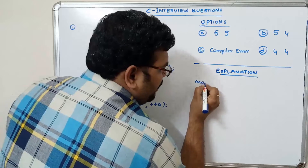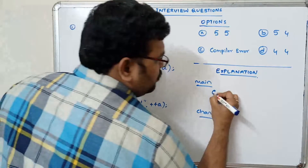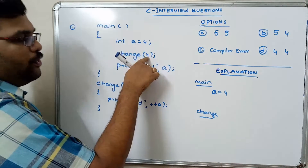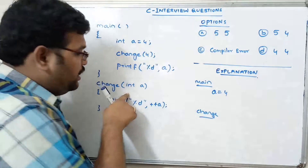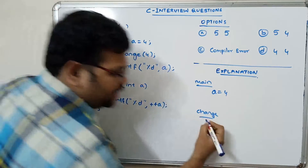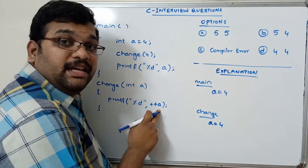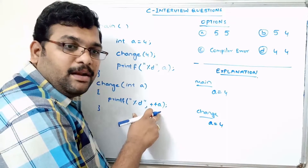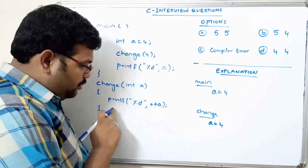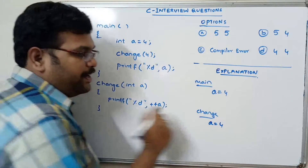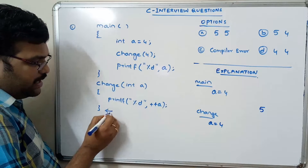In the main function, a is equal to 4 and 4 is passed as an argument to the function definition. In the change function, a is equal to 4. Now printf with pre-increment: ++a means first we increment the value and then use it, so the incremented value will be printed. After control returns to the original position in main, printf with %d will print a.